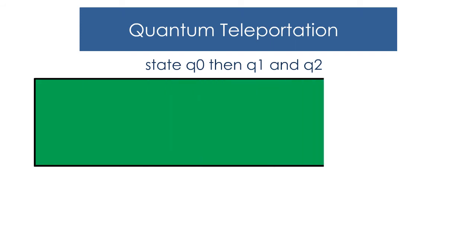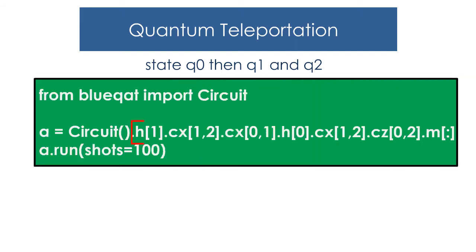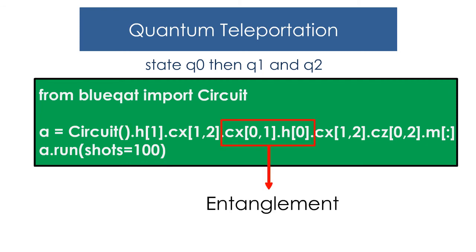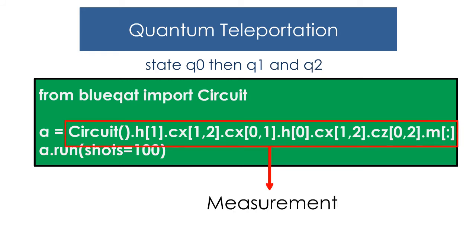We will achieve quantum entanglement state by applying H gate to q1 and C-NOT on q1 and q2. We will make measurement by generating entanglement at q0 and q1 and applying H gate to q0. In this case, we will substitute CX and CZ circuit instead of X gate and Z gate.